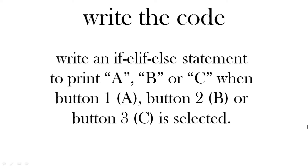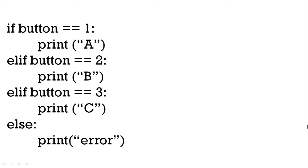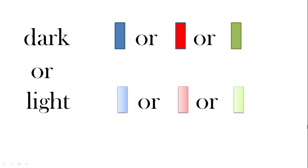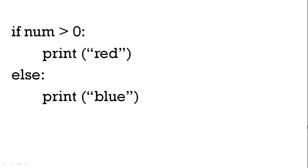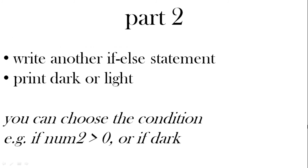Let's go through the answers. We started with an if-elif statement to print A, B, or C for buttons one, two, or three — using if button equals equals one print A, elif two print B, elif three print C. For the six-color example: part one, if number is greater than zero print red, else print blue. Part two was the same except print dark and print light based on number two being greater than zero.